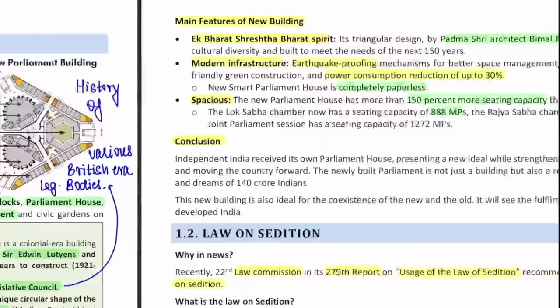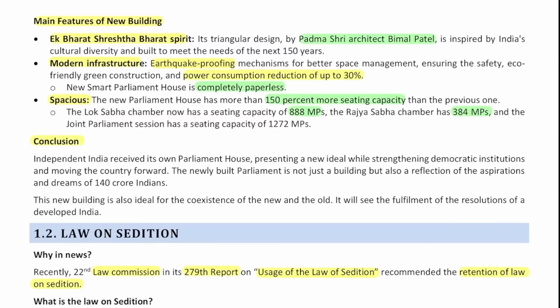What are the main features of the new building? It is built in the Ek Bharat Shrestha Bharat spirit with elements from various Indian cultures. It was built by Padma Shri architect Bimal Patel — another prelims fact. Modern infrastructure is there, earthquake-proofing mechanisms are there, and it is green construction with up to 30% reduction in power consumption. Another prelims fact: the new parliament house is completely paperless. It is spacious with 150% more seating capacity — Lok Sabha capacity is now 888 and Rajya Sabha is 384. Even if the number of MPs increases, this parliament house can seat them.